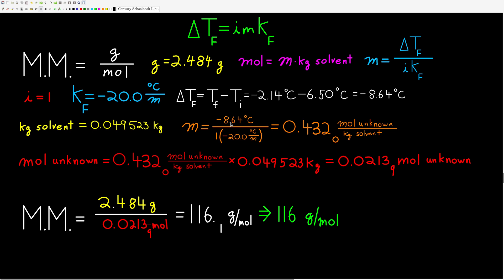Delta Tf is negative 8.64°C, i is 1, and Kf is negative 20.0°C per molal — giving a molality of 0.432 moles of unknown per kilogram of solvent. Multiplying by the kilograms of solvent: 49.523 grams of cyclohexane equals 0.049523 kilograms, so we get 0.02139 moles of the unknown. Dividing the mass by the moles gives a molar mass of 116 grams per mole.